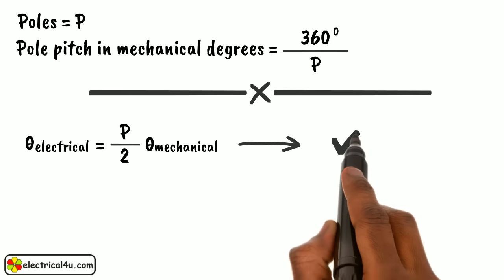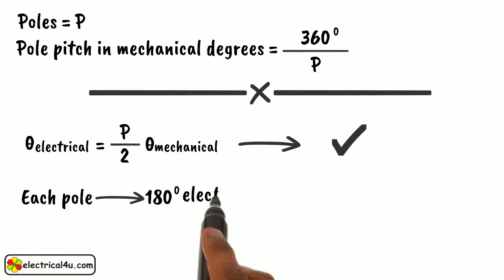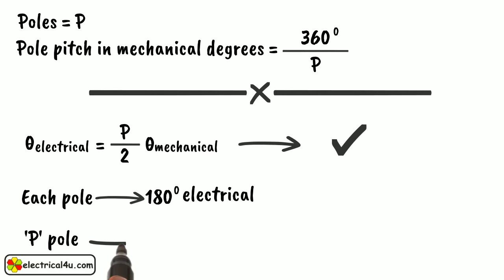This equation can be proved very easily. In any electrical machine, each pole constitutes 180 degrees electrical. So for a p pole machine, the total electrical angle can be expressed as theta electrical equals to p into 180 degrees.